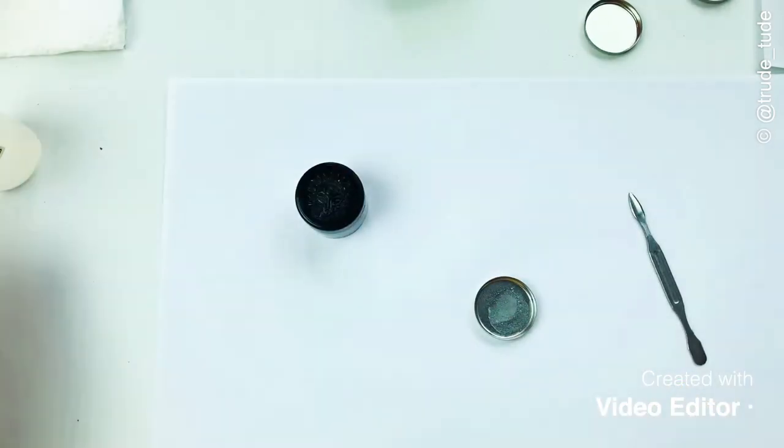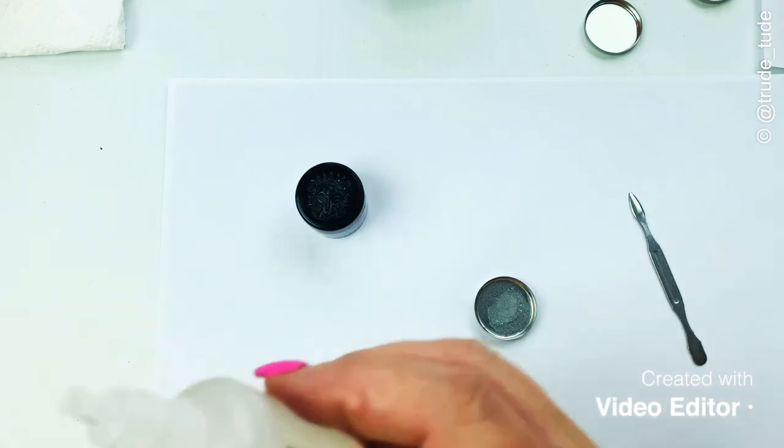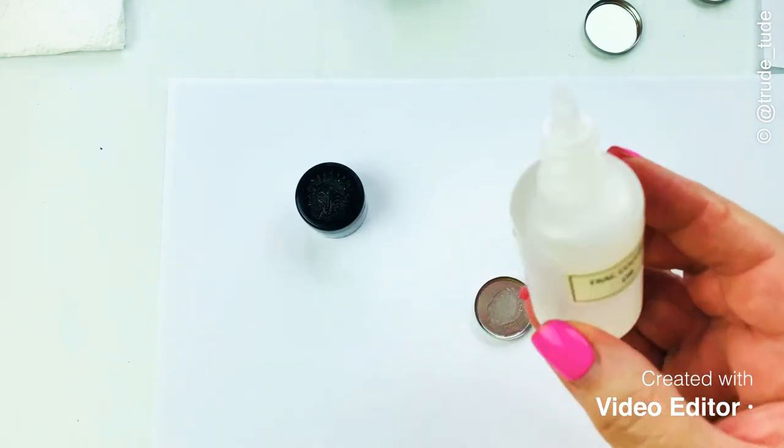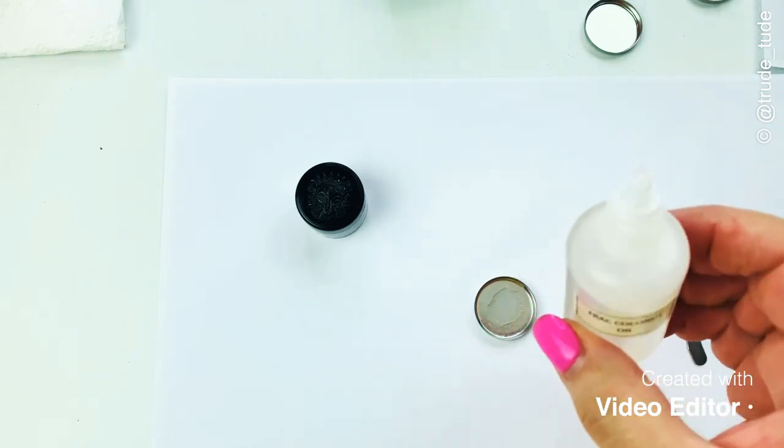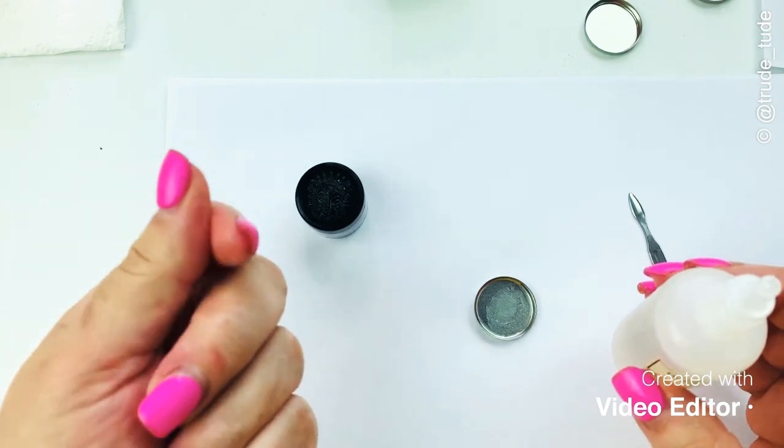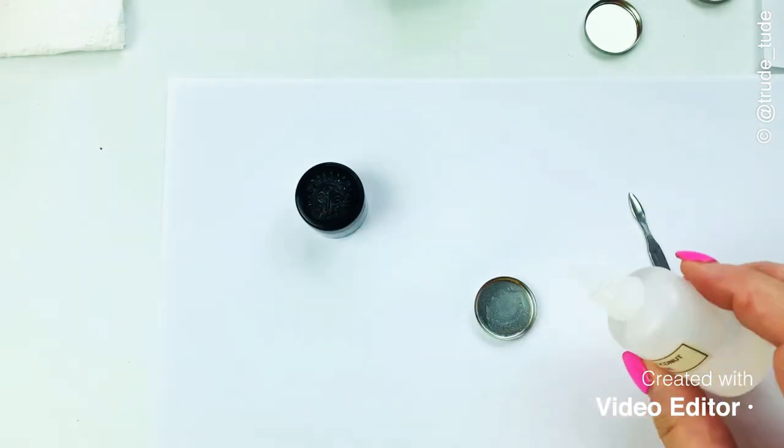The other thing I add is one drop of fractionated coconut oil, and again this just helps with slip. It keeps it smooth, keeps it easier to apply with a brush or a finger. There's no drag or grainy feeling. It's really just smoothing things out.